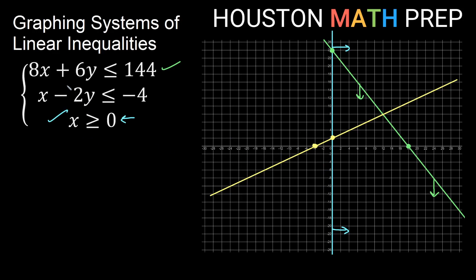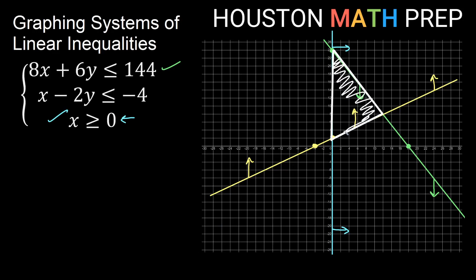For the shading direction: I have a negative coefficient in front of y, so this is opposite what we see here — think of it as a greater than instead of less than, which means shade above. So I want to be above this yellow line. I need to be to the right of the blue line, below the green line, and above the yellow line — that puts us in this triangular region, which is the solution for all these inequalities.